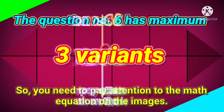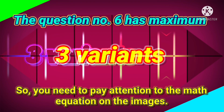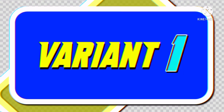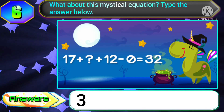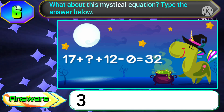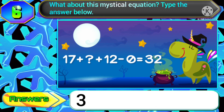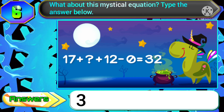Question number six has maximum three variants, so you need to pay attention to the math equation on the images. In variant one, if the mathematical equation comes as 17 plus question mark plus 12 minus 0 equals 32, then the answer of the question mark will be 3.